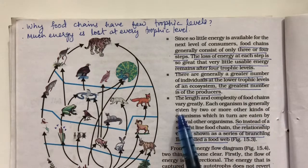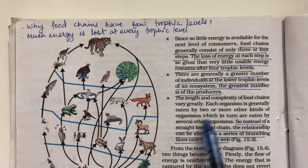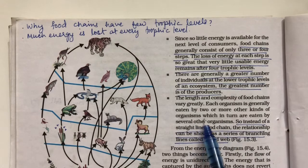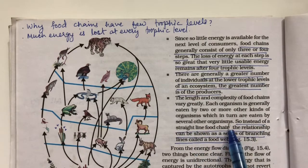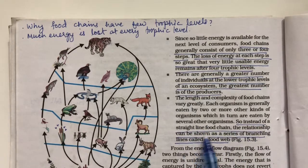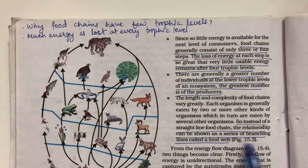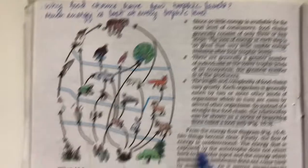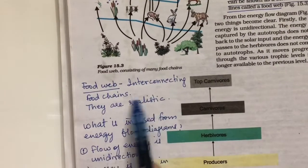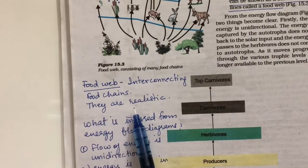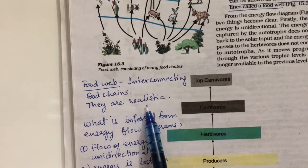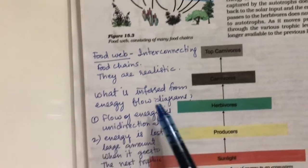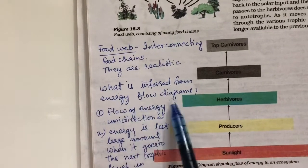Each organism is generally eaten by two or more other kinds of organisms, which in turn are eaten by several others. Instead of a straight-line food chain, these relationships form a series of branching lines called a food web. A food web is simply interconnected food chains and is a more realistic representation of nature.